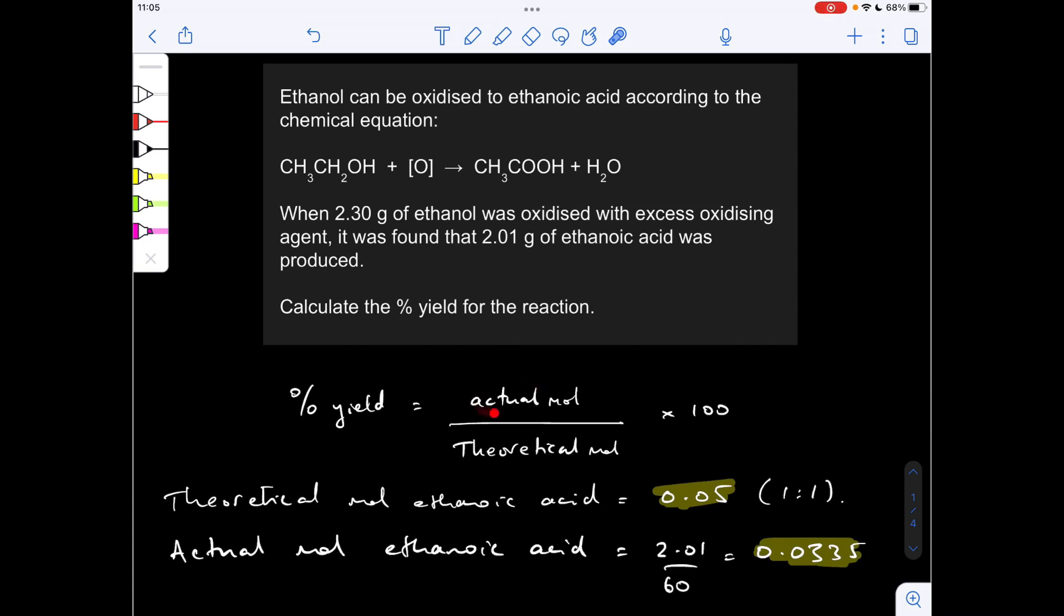So we take the actual moles, 0.0335, divide by the theoretical moles, 0.05, and multiply those by 100. So you can see that's coming out with the percentage yield for this reaction at 67%.